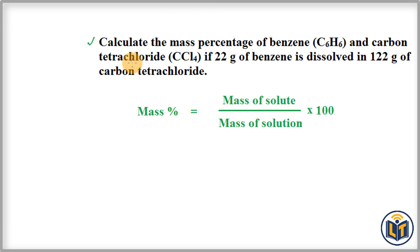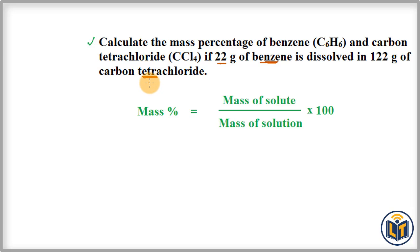The problem states: calculate the mass percentage of benzene and carbon tetrachloride if 22 grams of benzene is dissolved in 120 grams of carbon tetrachloride. So benzene is the solute and carbon tetrachloride is the solvent, and we have to calculate the mass percentage of both.